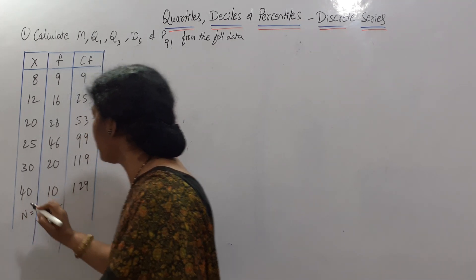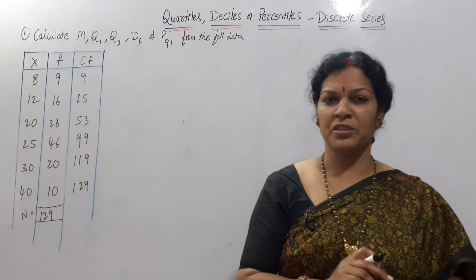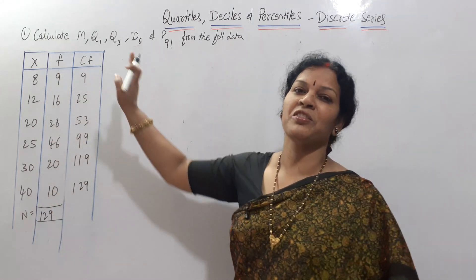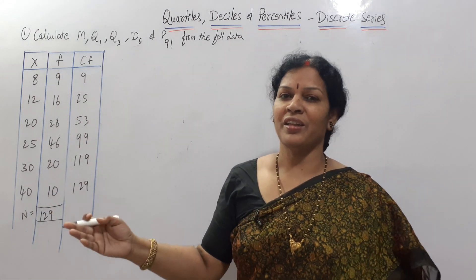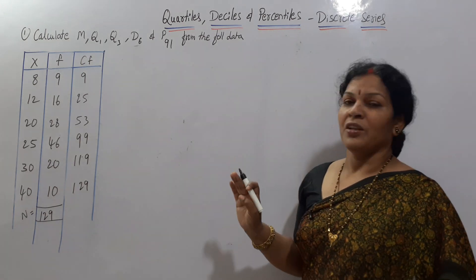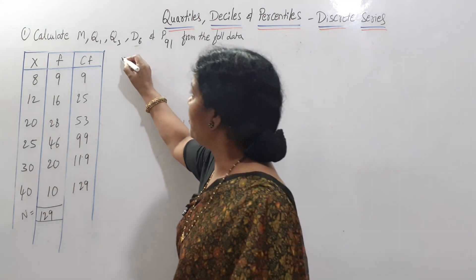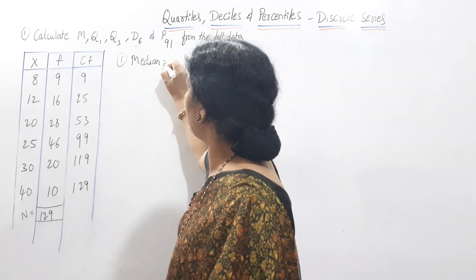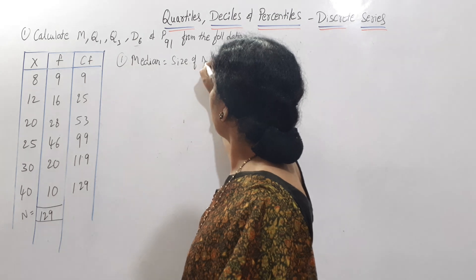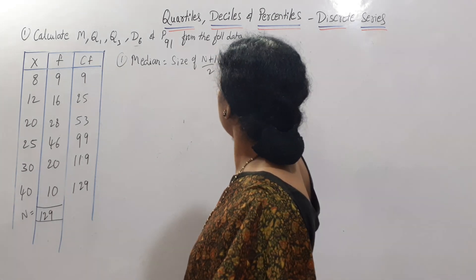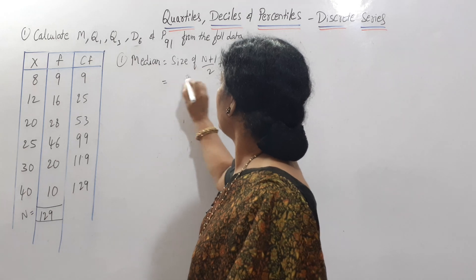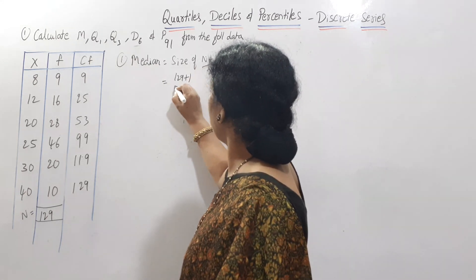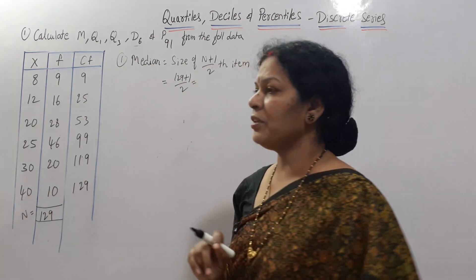Now apply the formula. For median in discrete series: Median = size of (N+1)/2 th item. N is 129, so (129+1)/2 = 130/2 = 65. We need the 65th item.